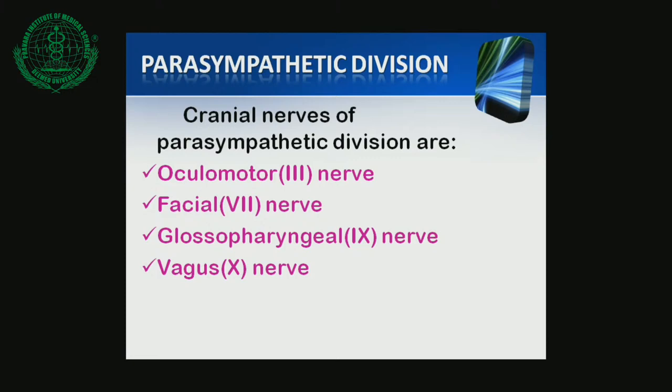The cranial nerves of the parasympathetic division are: first, the Oculomotor nerve — third cranial nerve; second, the Facial nerve — seventh cranial nerve; third, the Glossopharyngeal nerve — ninth cranial nerve; and fourth, the Vagus nerve — tenth cranial nerve.